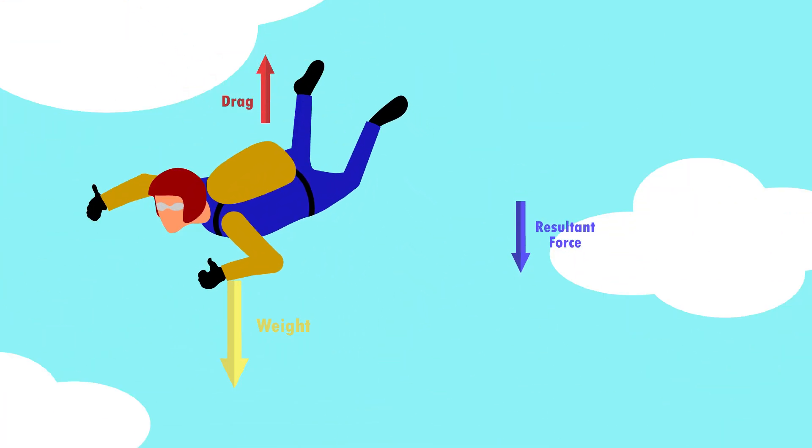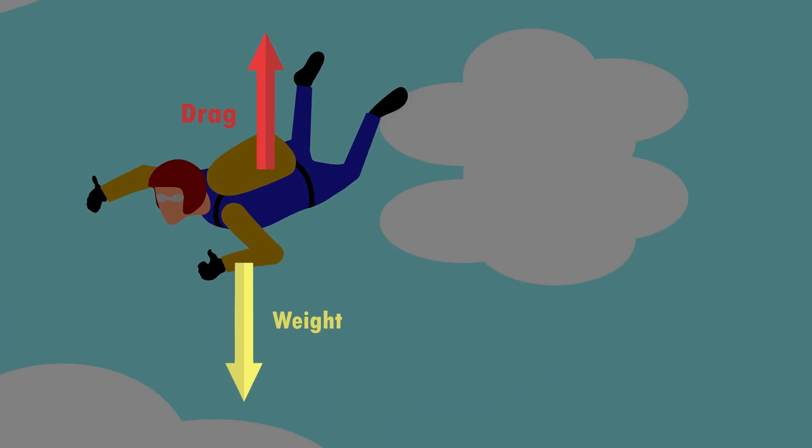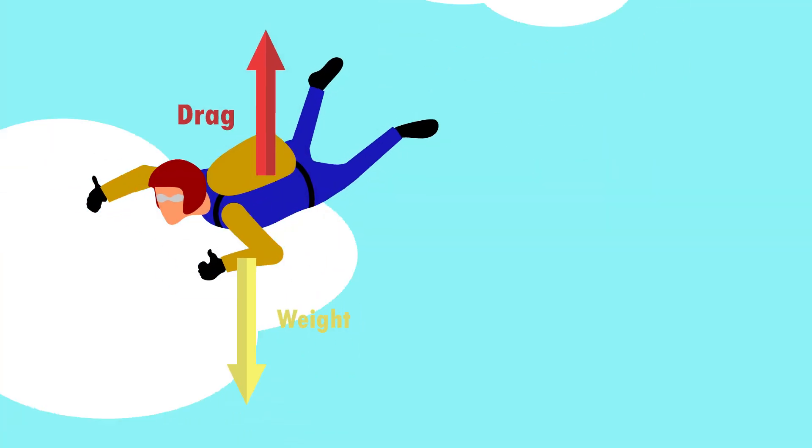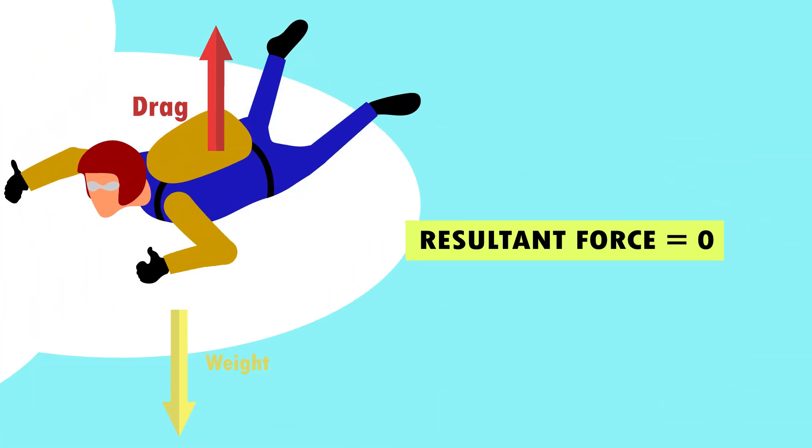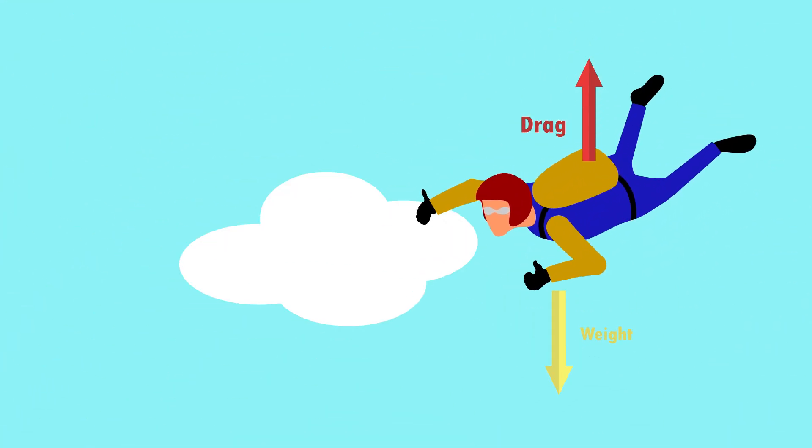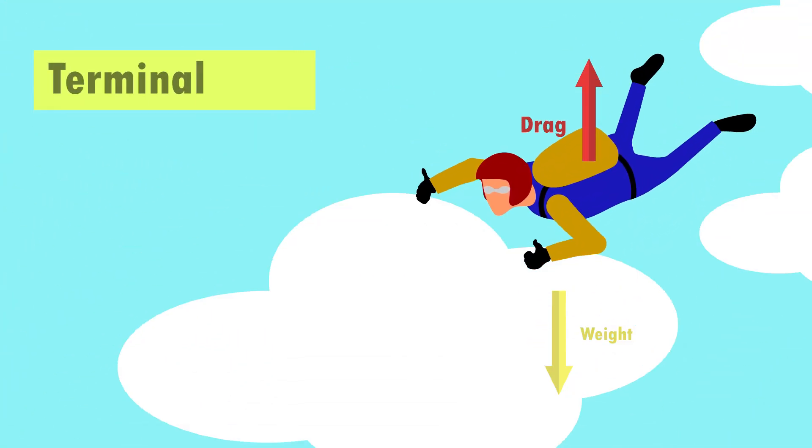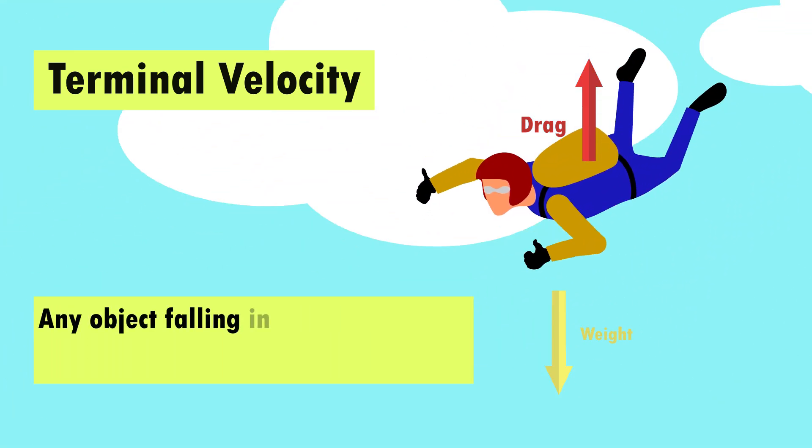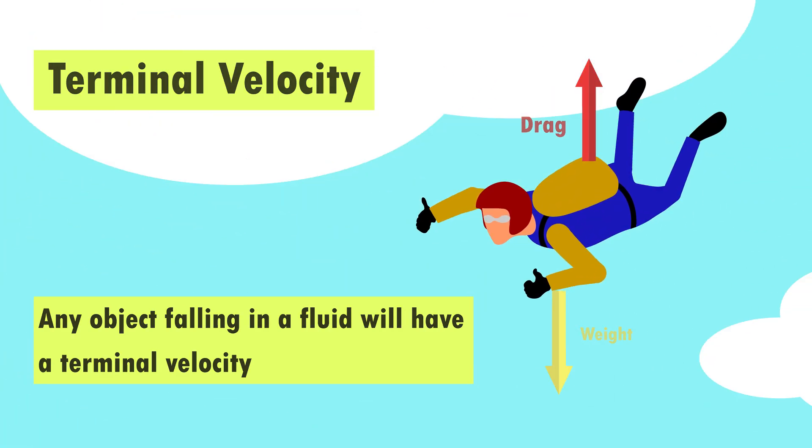The drag continues to get bigger until eventually it's the same size, but the opposite direction to the weight. The resultant force has gone to zero. The forces are now balanced and the skydiver falls at a constant speed. We call this the terminal velocity. Any object falling in a fluid will have a terminal velocity, a maximum speed it can fall.